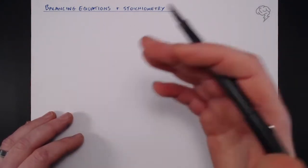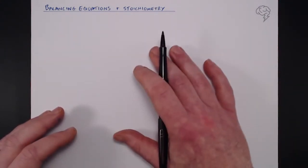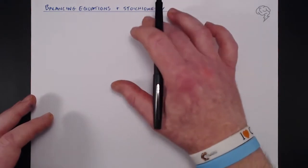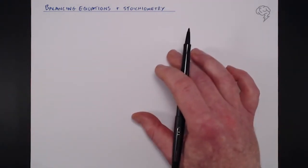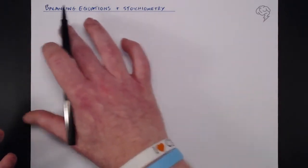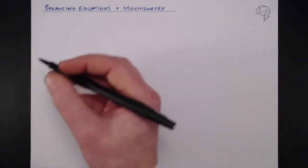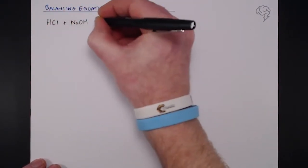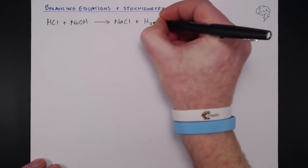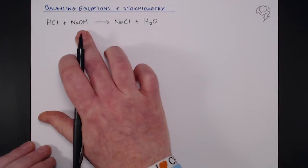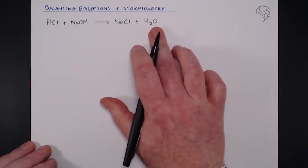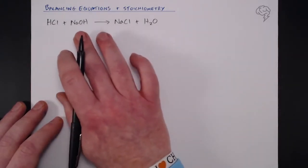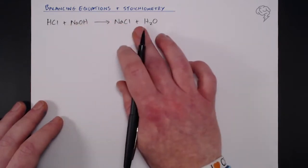Balancing equations is something you will have done at GCSE, and it scares a lot of people — but it really shouldn't. I'm going to go through four different examples on balancing equations and then talk about the stoichiometry that goes hand-in-hand with it. The name of the game is to get the same number of atoms of each element on either side of the equation.